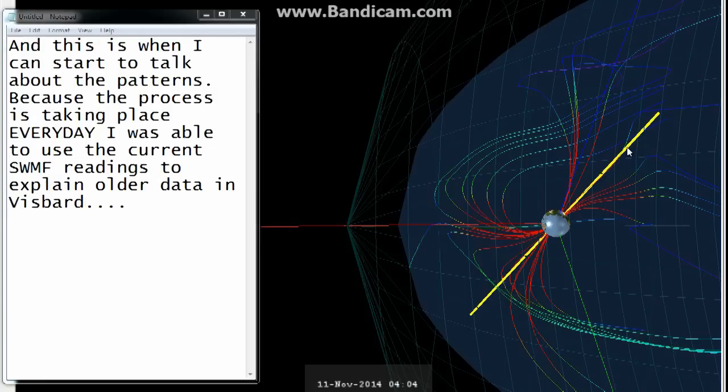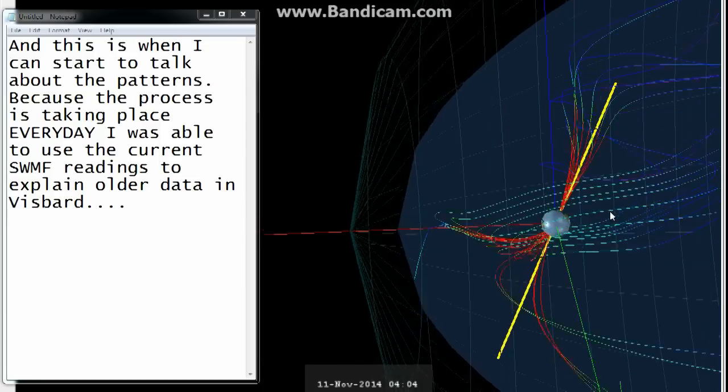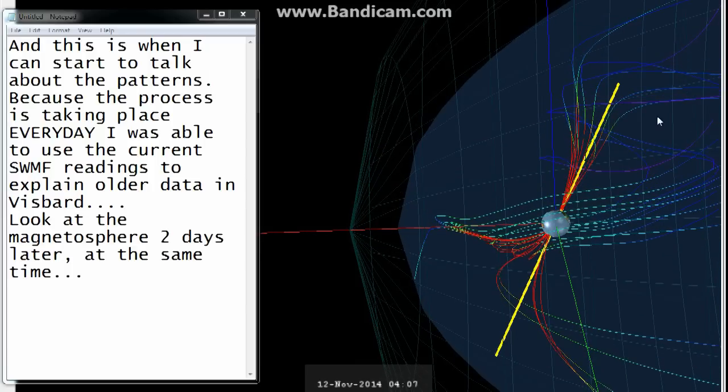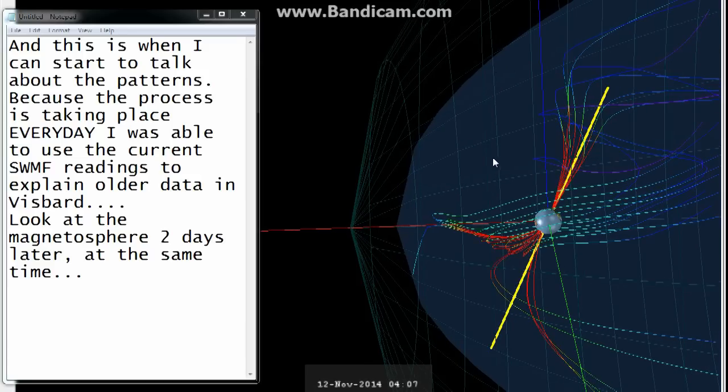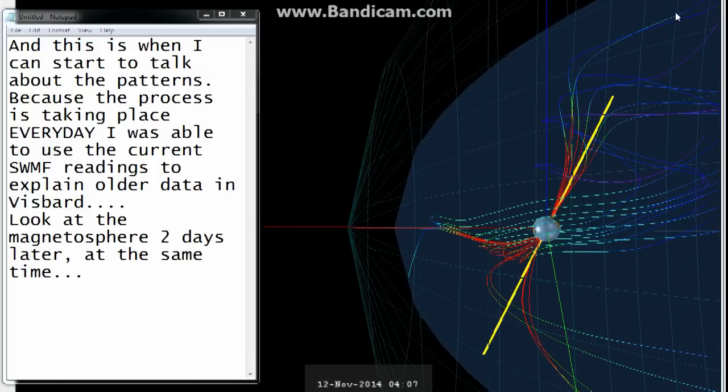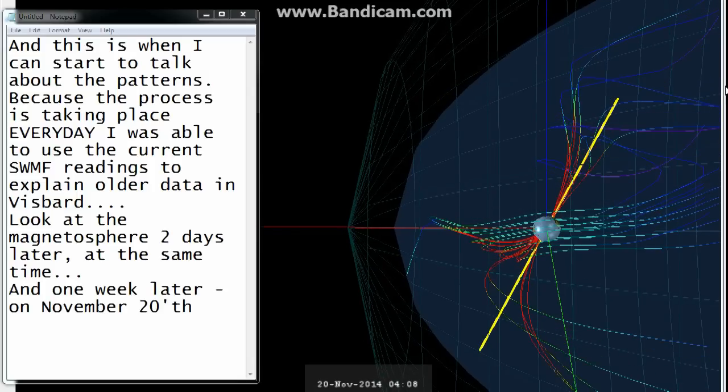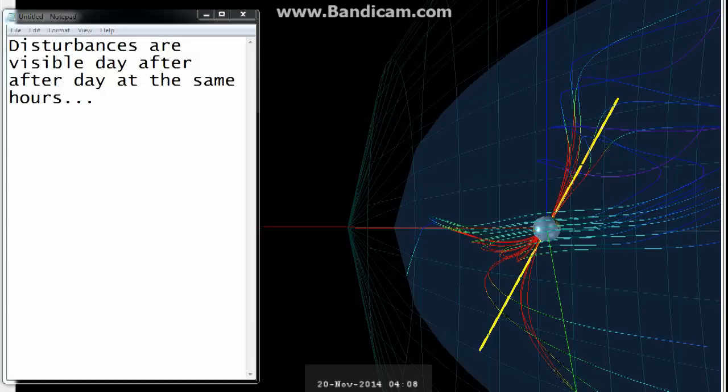And this is when I can start to talk about the patterns. Because the process is taking place every day, I was able to use the current SWMF readings to explain older data in Visbart. Look at the magnetosphere two days later at the same time, and one week later on November 20th. Disturbances are visible day after day at the same hours.